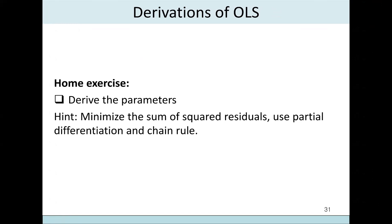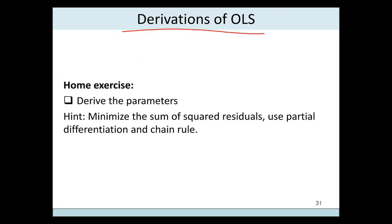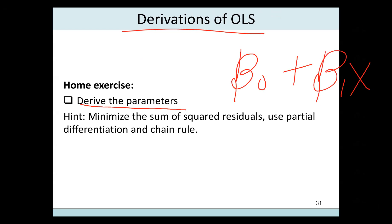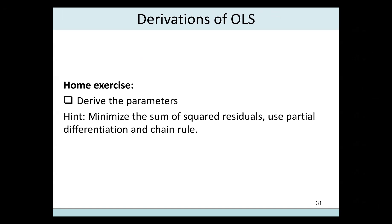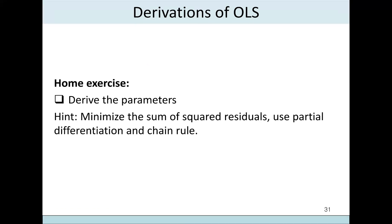There is a homework exercise for you to do throughout the week: derive the parameters beta naught and beta 1 for the equation Y equals beta naught plus beta 1 X plus the stochastic variable. The hint is to derive the OLS estimators using calculus — differentiate on both sides. A recording will be provided to help you remember the process.